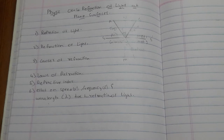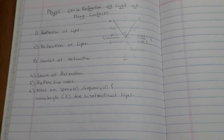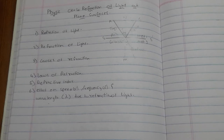Under reflection there are two laws. First, the angle of reflection is equal to the angle of incidence. Second, the incident ray, the normal at the point of incidence, and the reflected ray all lie in one plane. Also, light has a maximum speed of 3 × 10⁸ m/s.